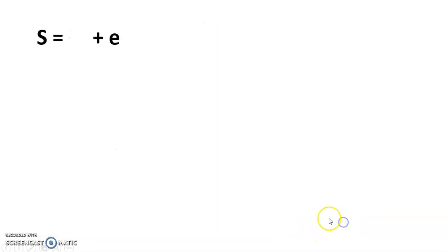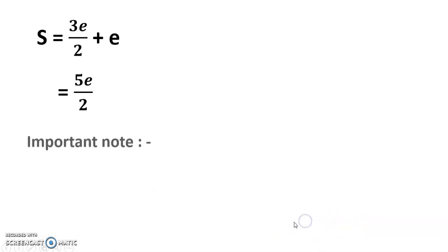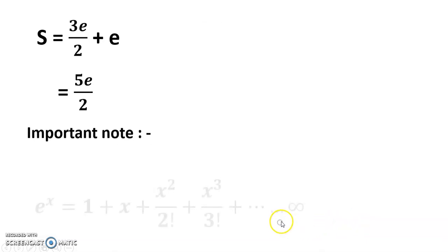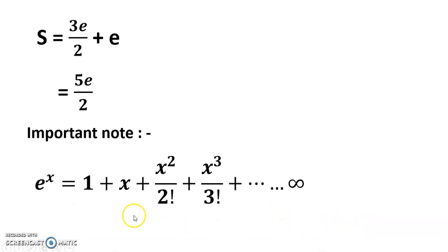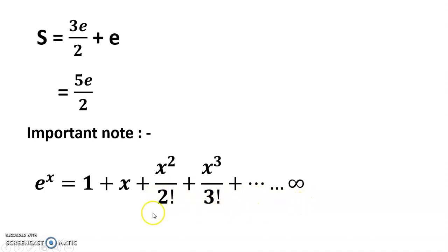This simplifies to 3e/2 + e = 5e/2. Important note: e to the power x equals 1 + x + x²/(2!) + x³/(3!) + ... up to infinity. Thanks for watching; I hope it is clear.